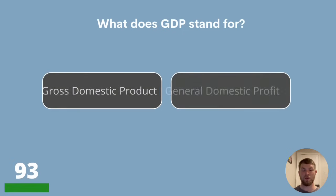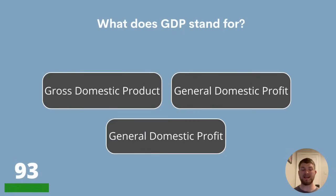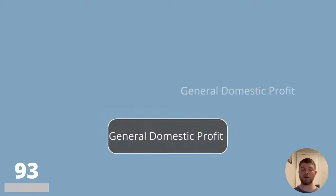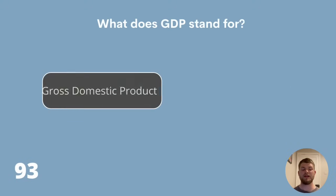Question 93. What does GDP stand for? Gross domestic product, general domestic profit, or capital production index? The answer is gross domestic product.